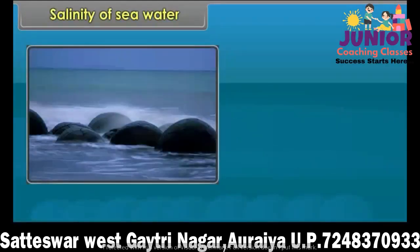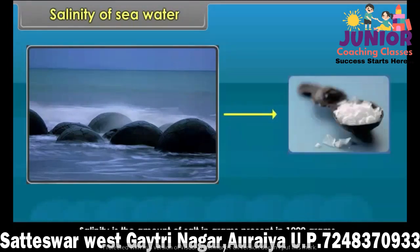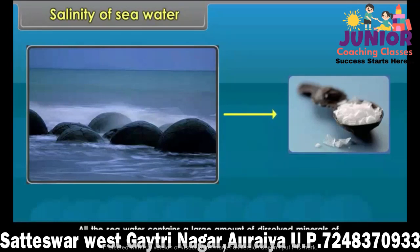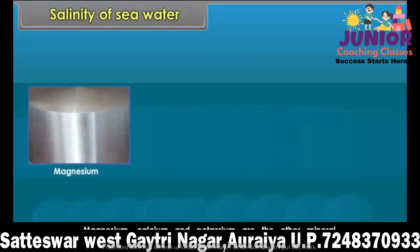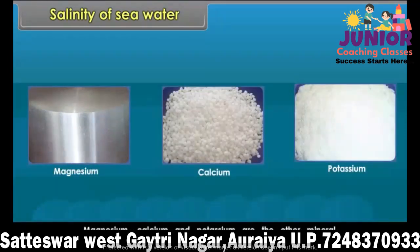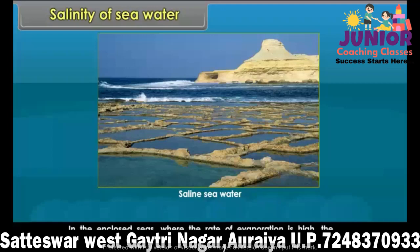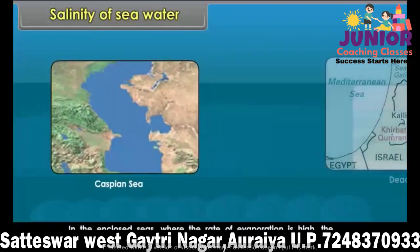Salinity is the amount of salt in grams present in 1000 grams of water. The average salinity of the oceans is 35 parts per thousand. Seawater contains a large amount of dissolved minerals, of which sodium chloride or common salt constitutes more than 77%. Magnesium, calcium, and potassium are the other mineral compounds. In enclosed seas where the rate of evaporation is high, the salinity is high — for example, the Caspian Sea and the Dead Sea.